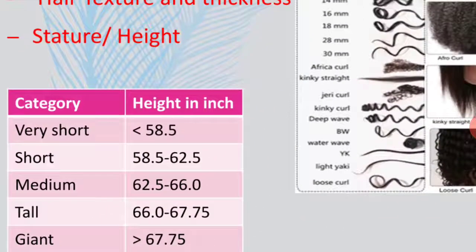Then we use the height of a person to classify them, and this is also called stature. Stature is basically measured in inches. Here there are 5 classifications: very short — people with height less than 58.5 inches — then the maximum height is more than 67.75 inches and they are categorized as giant. In between there are short, medium and tall people.